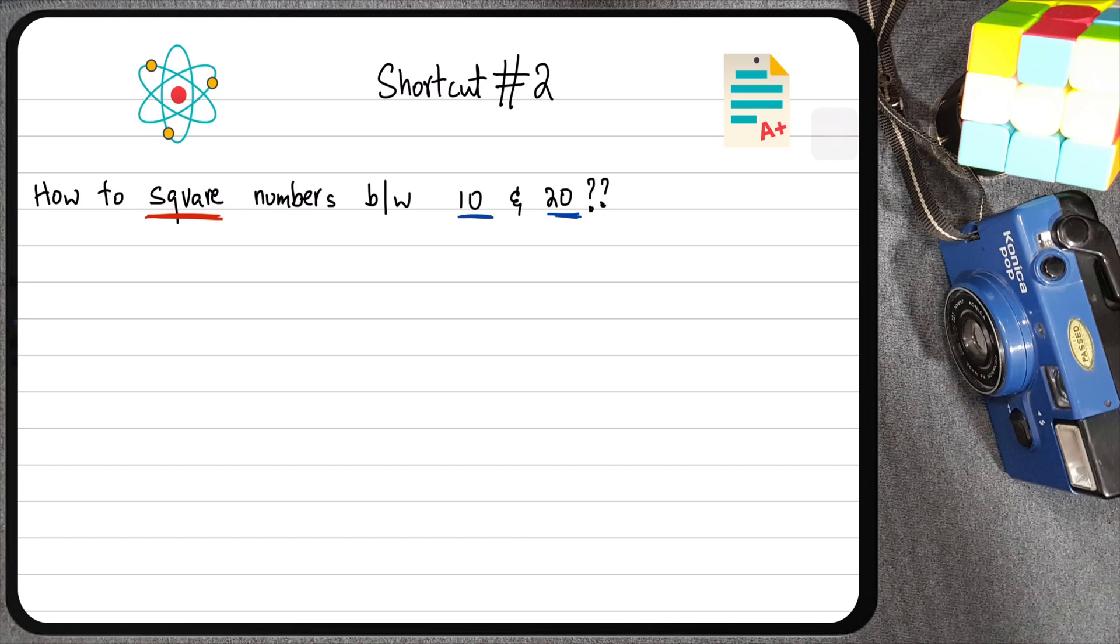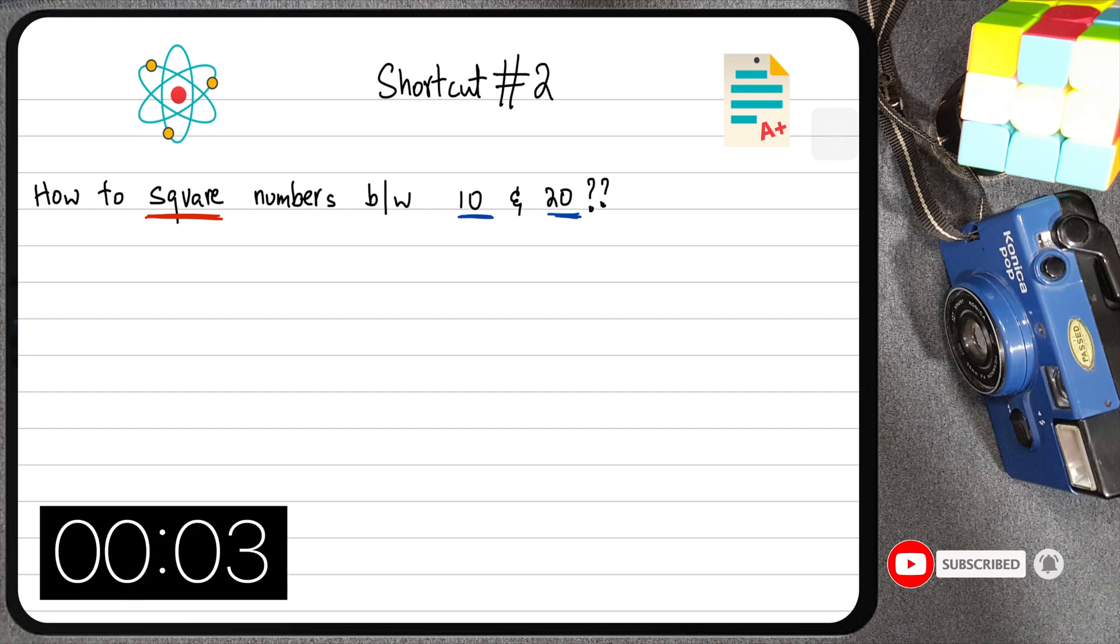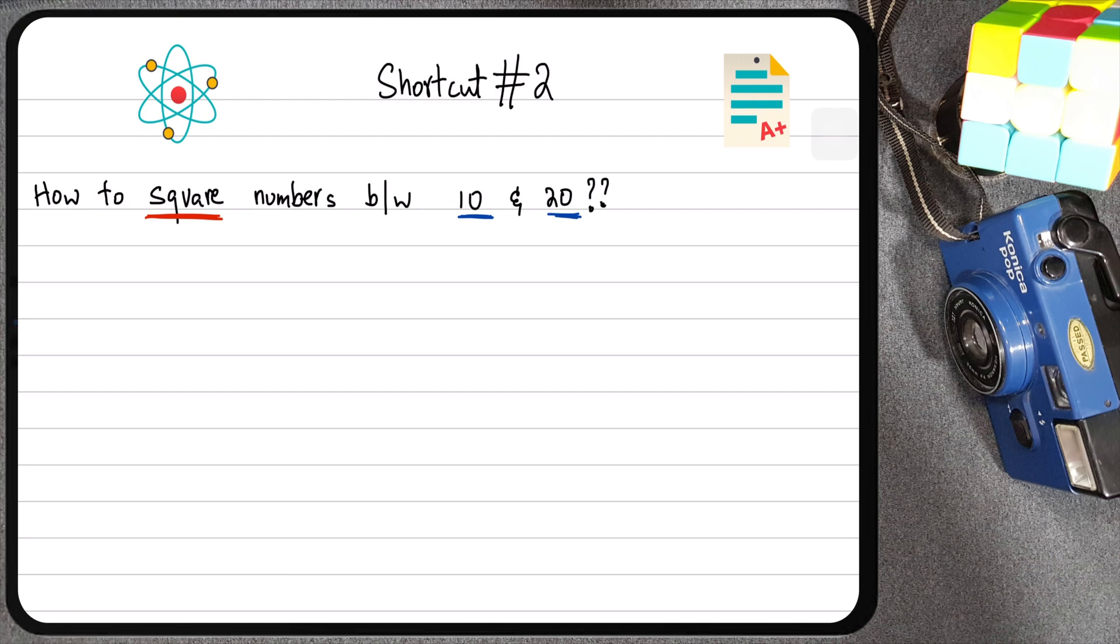What if I told you that you can square numbers between 10 and 20 in less than, ready, in less than 3 seconds? Yep, that's exactly what we're going to learn in this video. So let's dive straight into it.